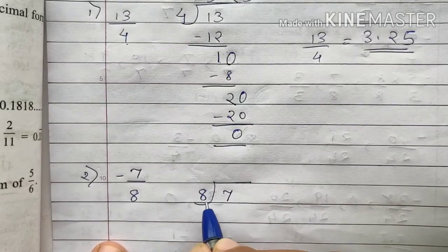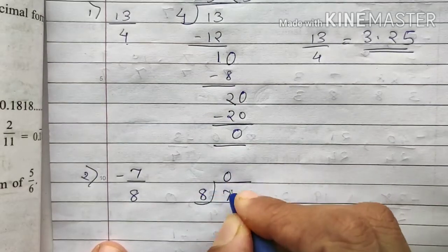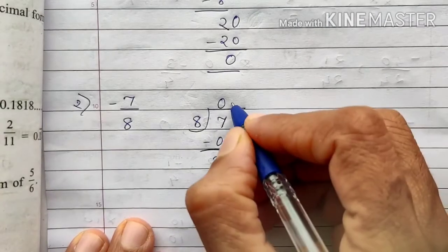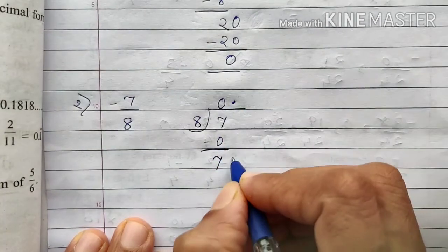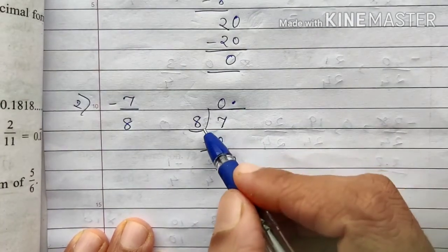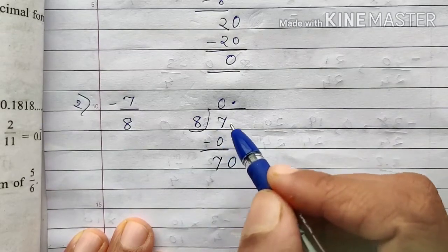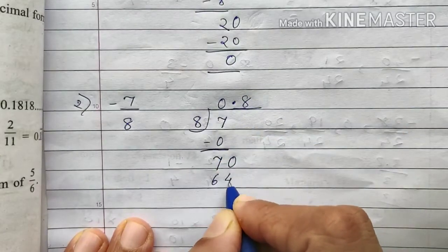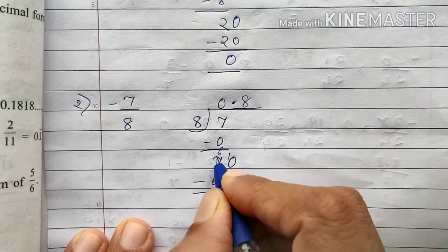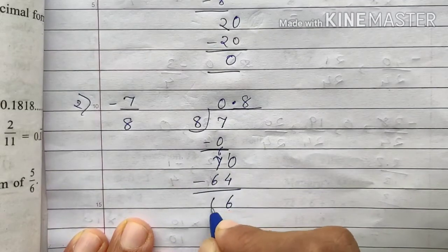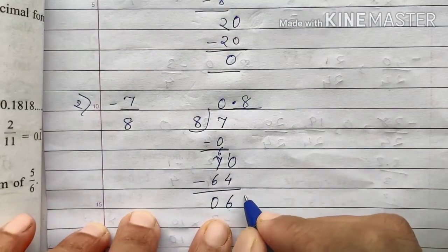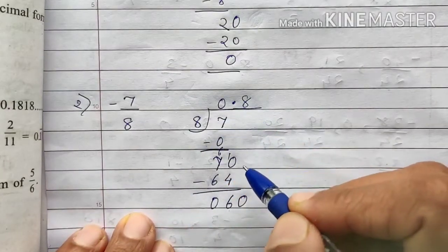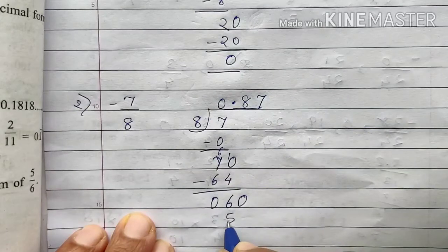Now 7 is less than 8, so 8 zeros are 0 and the remainder is 7. I add a decimal point and a zero. 8 eights are 64, so the digit is 8 and remainder is 6. I add another zero. 8 sevens are 56, so the digit is 7.